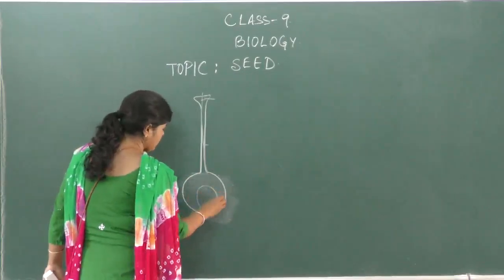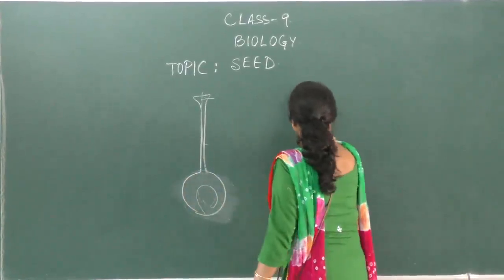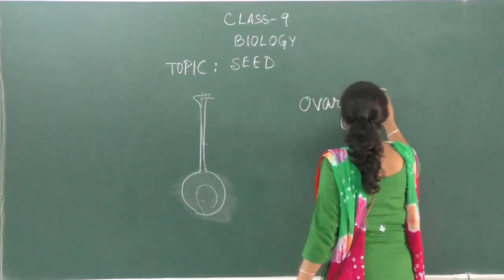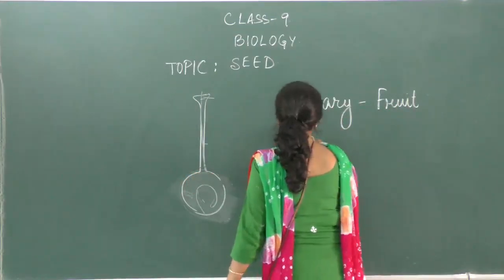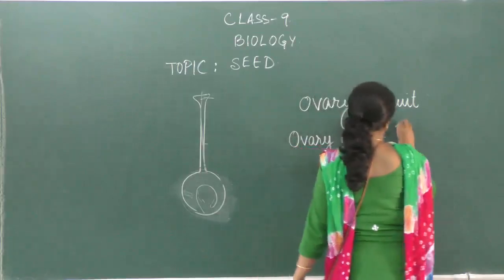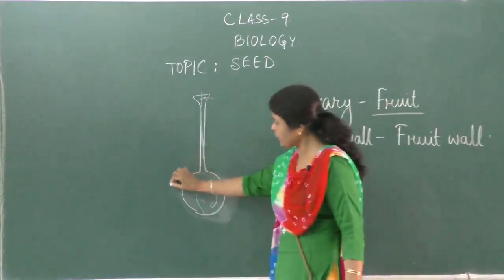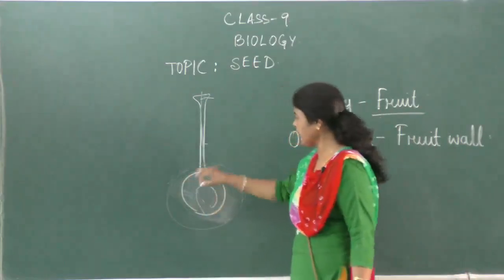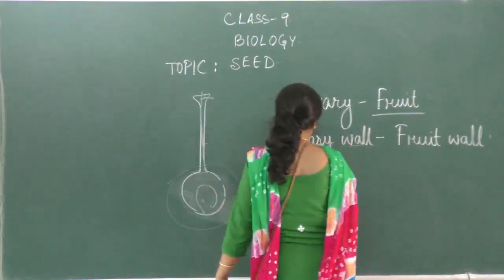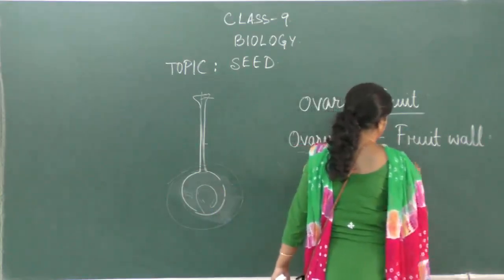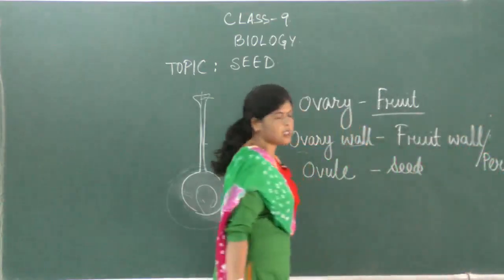Here is the ovary and here is the ovule. The ovary on the whole changes to fruit. The wall of the ovary — the fleshy wall — changes to fruit wall. The ovule changes to seed. The fruit wall is also known as the pericarp.